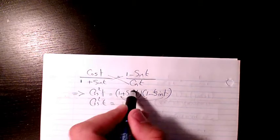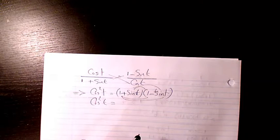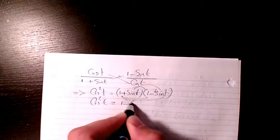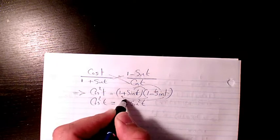You can expand it like that, or you can use the difference of squares that we mentioned many times. So the answer will be 1 minus sine squared t, or 1 squared which is the same thing, 1 minus sine squared t.